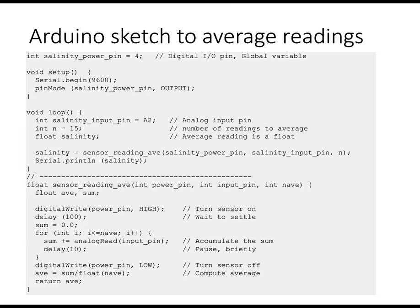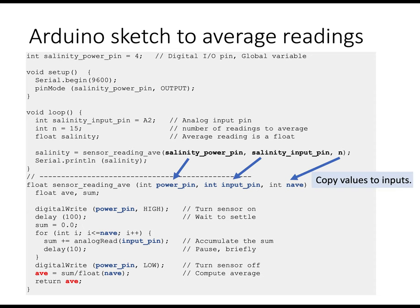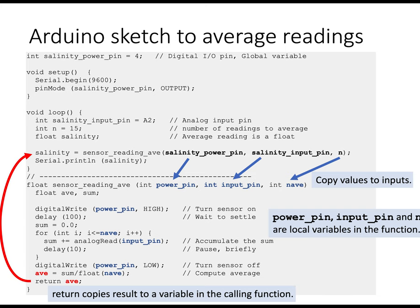Here's our complete sketch now. We've got variables highlighted in bold to call your attention. When the function sensor read-av is called, the values in salinity power pin are copied to power pin. The value in salinity input pin is copied to input pin. And the value in n is copied to n-av. The variable names can be different. And they have nothing to do with each other other than the order in which they appear in the parameter list. Inside, the local variables power pin, input pin are used, as you might expect. And the value that's stored in av gets returned to salinity.